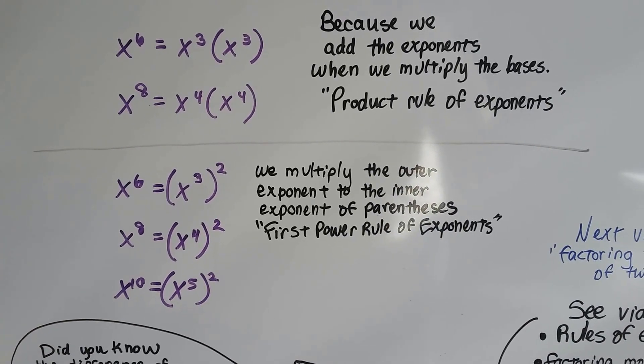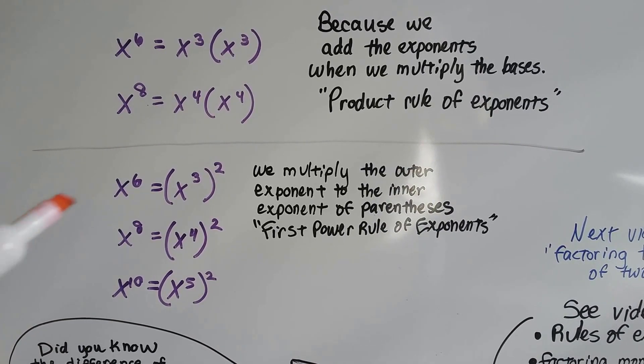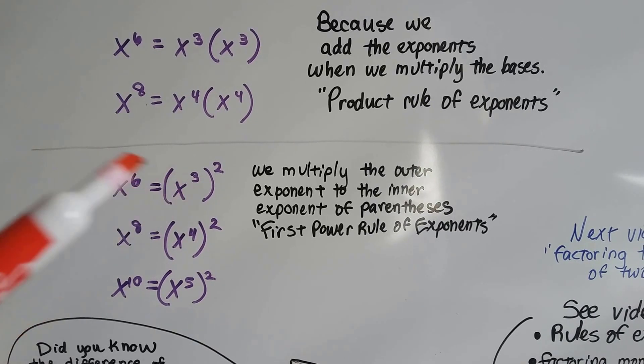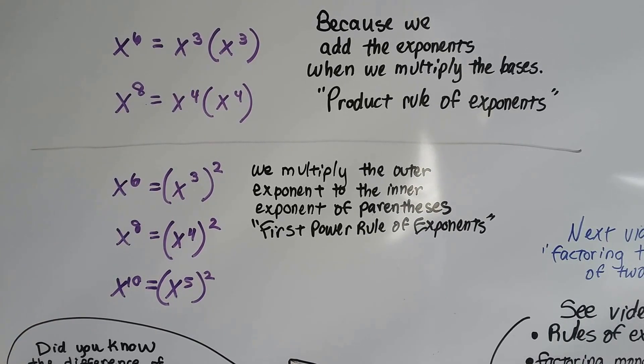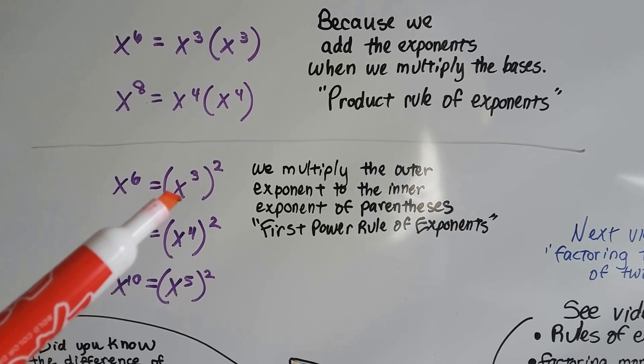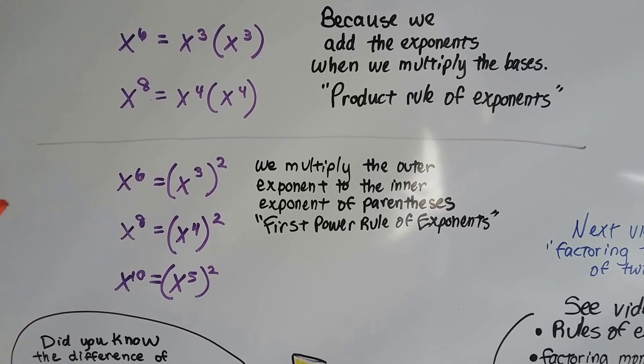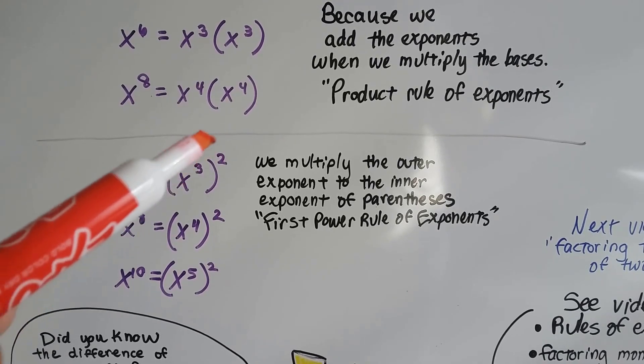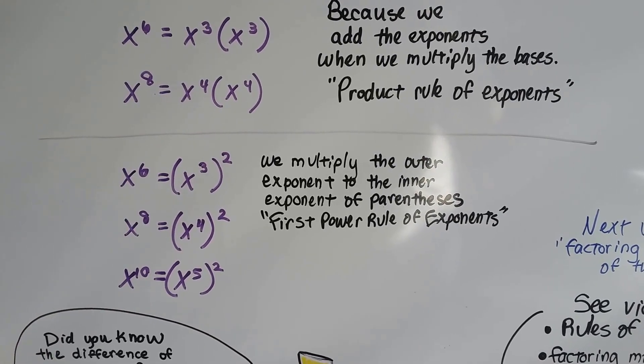And when we have an exponent on the outside, we multiply the outer exponent to the inner exponent inside the parentheses, right? Because that's the base. That's the first power rule of exponents. So this would be x to the 3rd times x to the 3rd. It's the same thing as x to the 6th. So when there's one on the inside and one on the outside, we just multiply them.